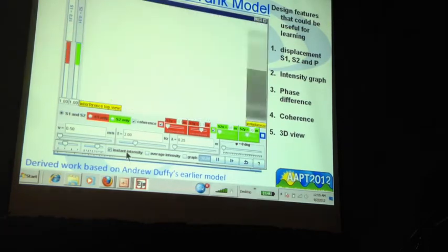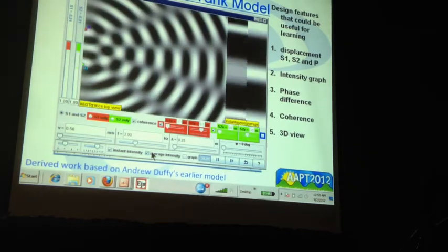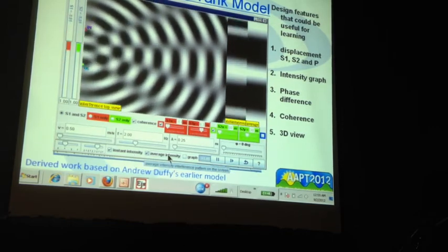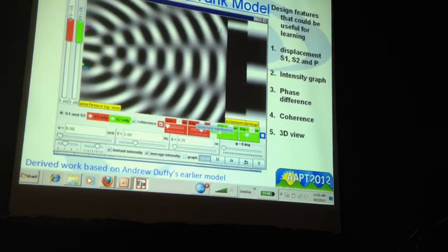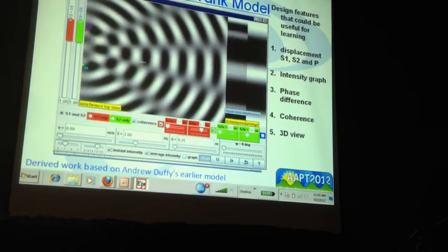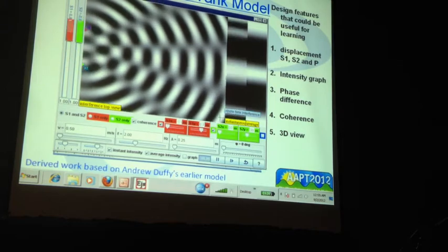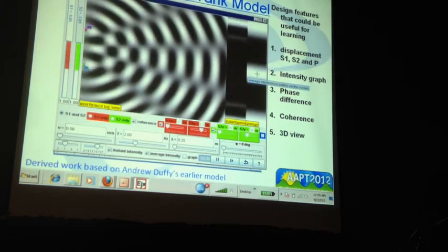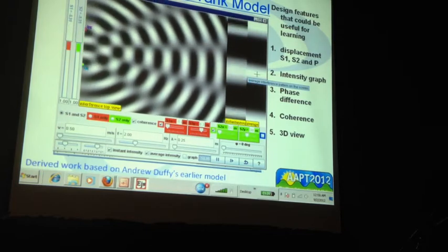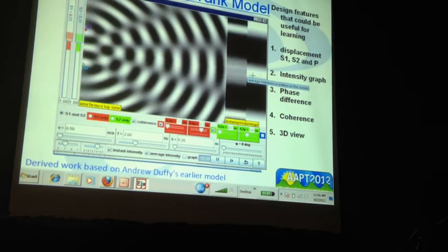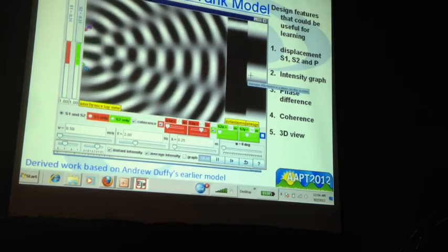Now, the other feature which was not available was this instantaneous intensity as well as the average intensity of the screen pattern. So as the ripple tank wave hits the screen, this should be the pattern that you should see, while this is the typical intensity, average intensity that the students are required to know. So we found that this could be quite useful.